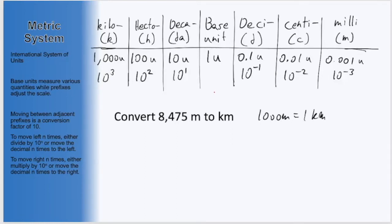Here we are starting in our base unit of meters, and want to move to the prefix kilo. Looking at our table, this means that we want to move one, two, three spaces to the left, which means we can take our number 8,475 and divide by 10 to that 3 power.